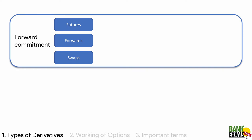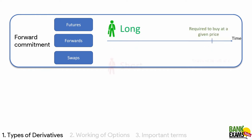In the forward commitments — I've already explained long and short in my previous lecture — both the long and the short enter into a contract and are required to buy and sell the commodity or whatever good they promised. There is a commitment. Whatever contract they entered, there is a commitment to fulfill it. The long is required to buy at a given price and the short is required to sell at a given price.